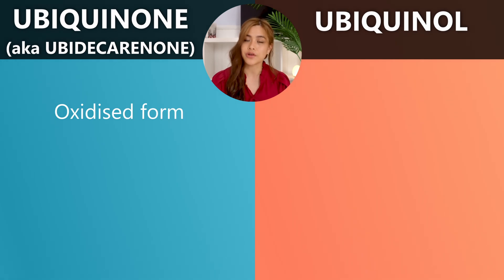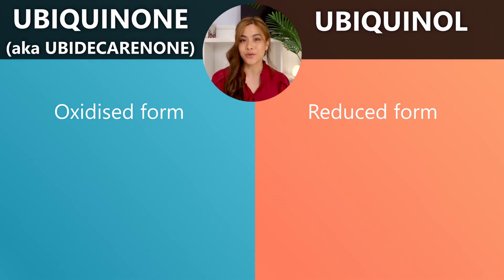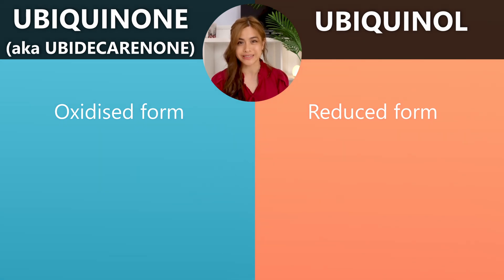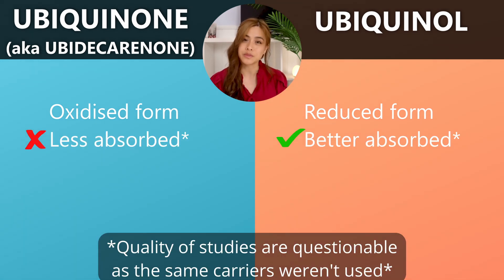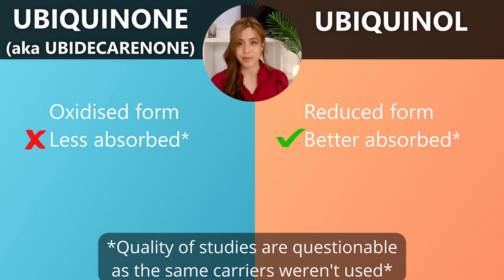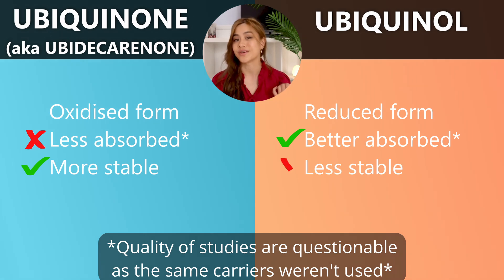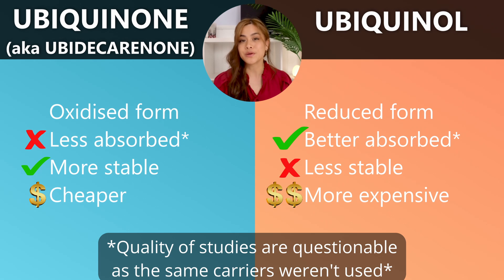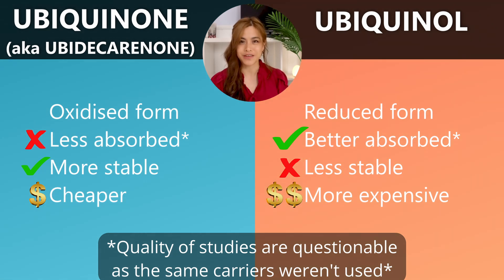Ubiquinone is the naturally occurring oxidized form and ubiquinol is the reduced form. Absorption seems to vary a lot depending on the person — some small studies have found ubiquinol to be better absorbed than ubiquinone, particularly in older patients. Ubiquinone is more stable and easier to manufacture, whereas ubiquinol is less stable, which makes it more expensive. Most clinical studies on CoQ10 have used the form ubiquinone.